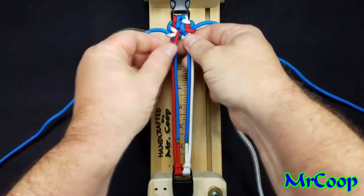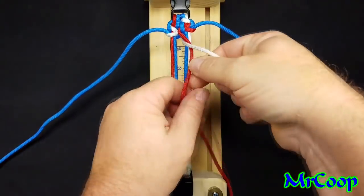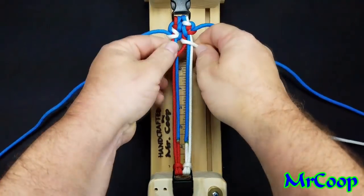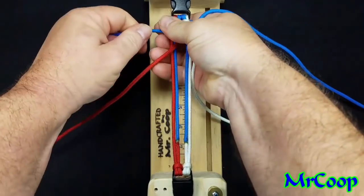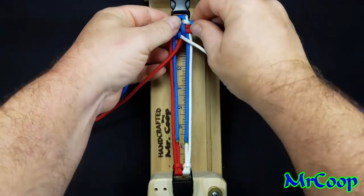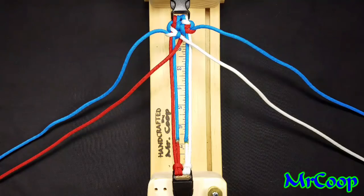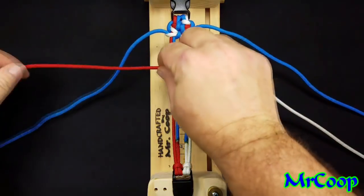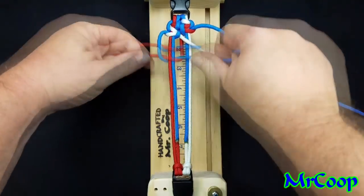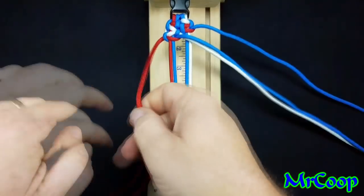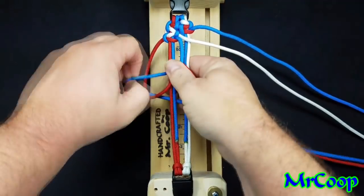Now, once again, our red's crossing over, and our white's crossing over. But this time, we're going to pull the white over across the top. Start with the red. Over, under, through the hole. Pull tight. Over, through the middle, under, through the hole.